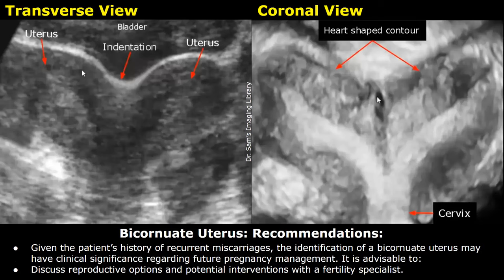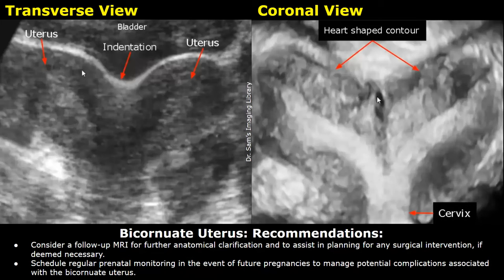These are the recommendations: given the patient's history of recurrent miscarriages, the identification of a bicornuate uterus may have clinical significance regarding future pregnancy management. It is advisable to discuss reproductive options and potential interventions with a fertility specialist. Consider a follow-up MRI for further anatomical clarification and to assist in planning for any surgical intervention if deemed necessary. Schedule regular prenatal monitoring in the event of future pregnancies to manage potential complications associated with the bicornuate uterus.